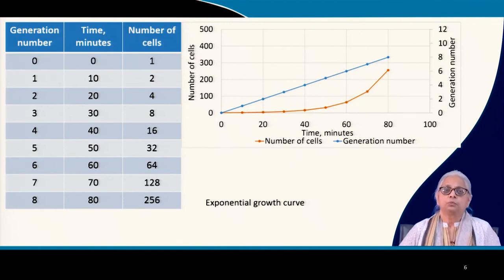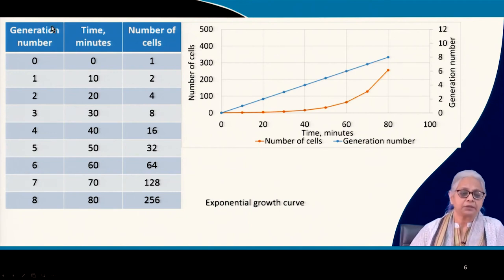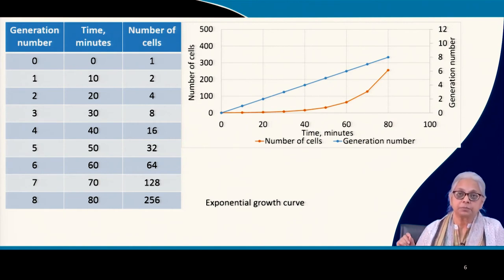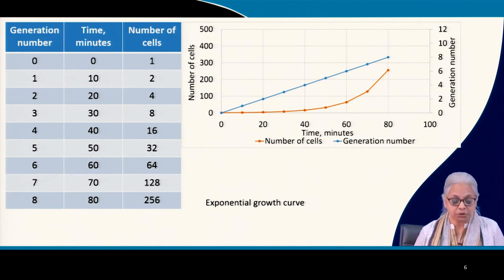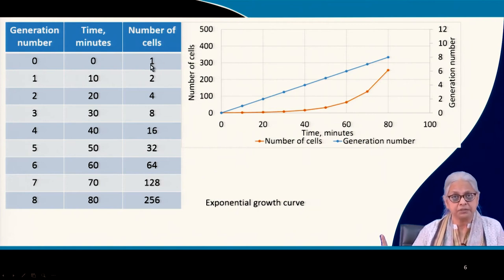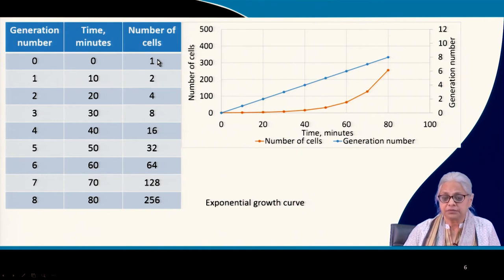Now let us look at the exponential part of the growth curve — generations, time, and number of cells. The number of cells can be expressed as cells per ml or as milligrams per litre measured as volatile suspended solids. Starting from a single cell: 1, 2, 4, and so on.